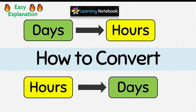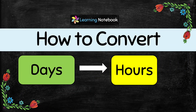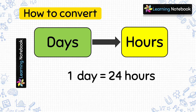Hello students, welcome to our channel Learning Notebook. In today's video we are going to learn how to convert days into hours and hours into days. So let's start and first learn how to convert days into hours. To convert days into hours we need to learn that one day equals 24 hours — this means one day has 24 hours. Now let's do some questions based on this.